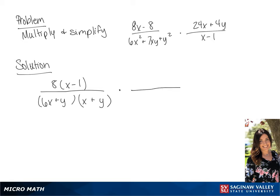We're going to factor the numerator of the second fraction, so we're going to have 4 times (6x plus y) over (x minus 1). Now we can simplify, and if we multiply across we are going to get 32 over (x plus y).